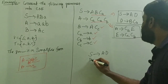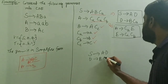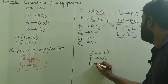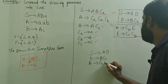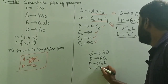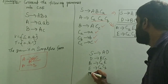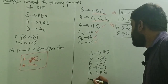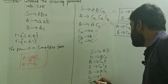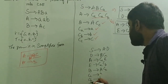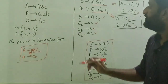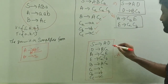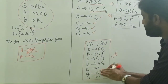Rewriting everything at once, the final Chomsky Normal Form grammar is: S tends to Ca D; D tends to B CaCa; A tends to Ca E; E tends to Ca Cb; B tends to A CC; Ca tends to a; Cb tends to b; Cc tends to c. This is the equivalent Chomsky Normal Form — every production has exactly two non-terminals or a single terminal only.